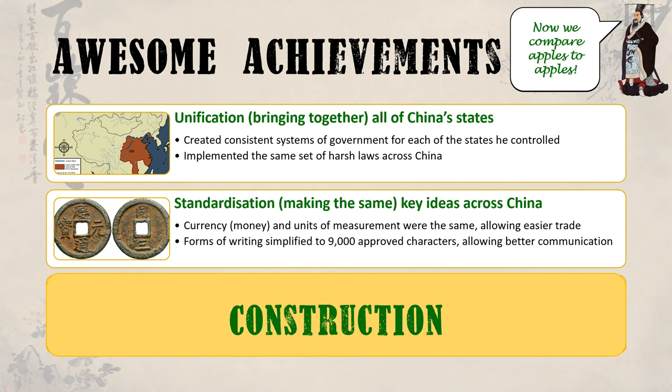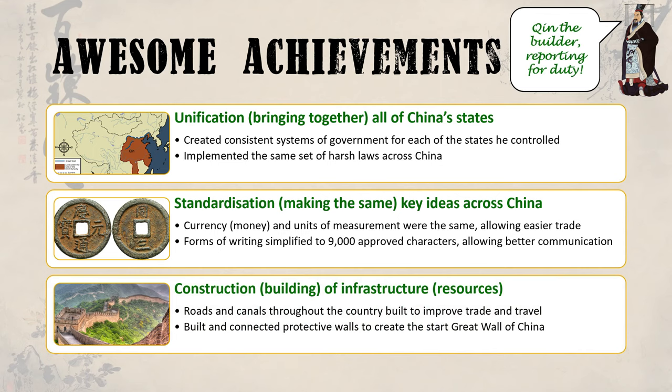Thirdly, Qin was known for his construction. Probably most famously, the Great Wall of China was seen as being largely due to Qin. Whilst protective walls already existed in China so each state could protect themselves against each other or other invaders from areas such as Mongolia, Qin worked to connect these walls to protect all of China, as well as build new walls to ensure his empire was safe. He was also known to build many roads and canals throughout the land, making travel much easier.